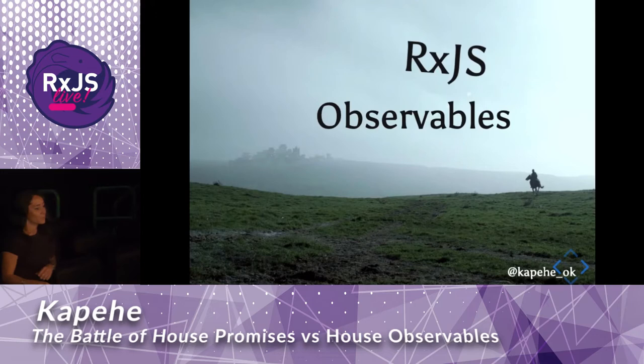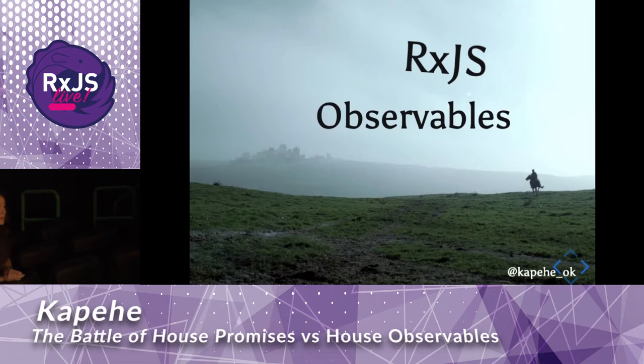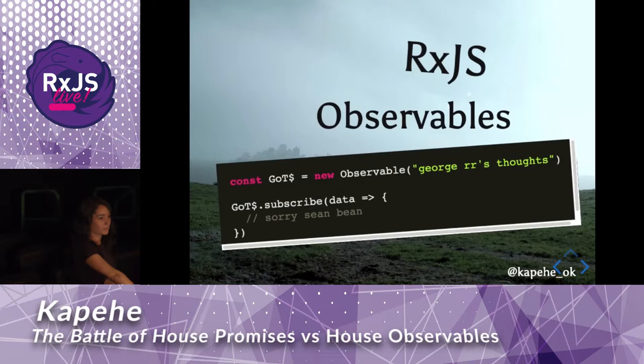Observables are able to emit multiple bits of data over time — you get a stream of data. To create an observable, you create a function and this function will return our data. But they are very lazy. We need to subscribe to the observable before we can get what we need. More efficient? We'll see.